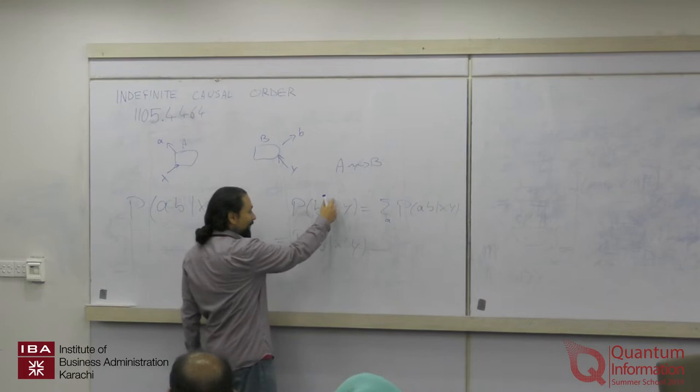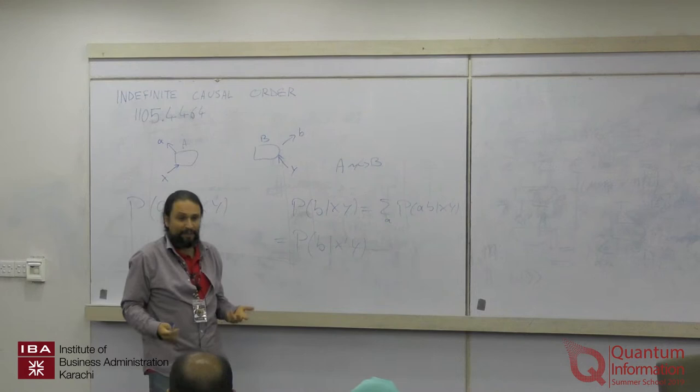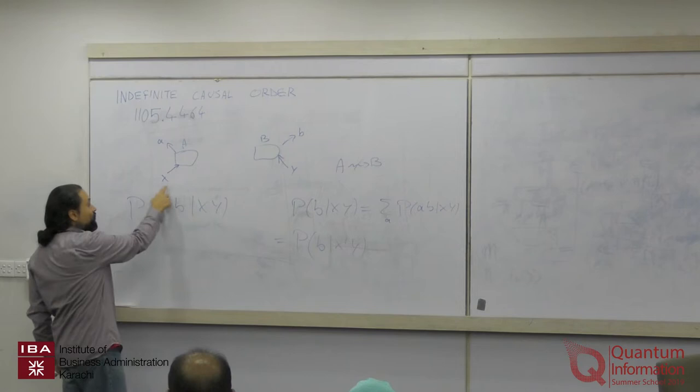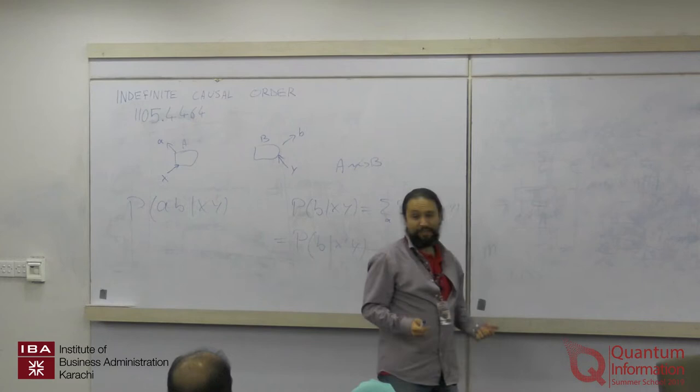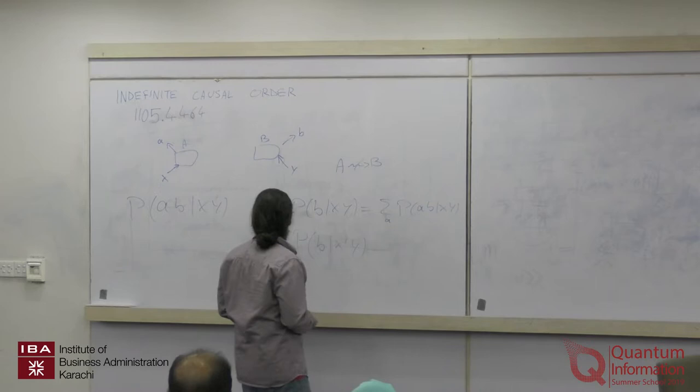By changing X, we can send a possibly noisy message to Bob, who reads it via B. This is at a very broad level how we interpret causal relations, and it's typically how it is discussed in the foundations of quantum physics.